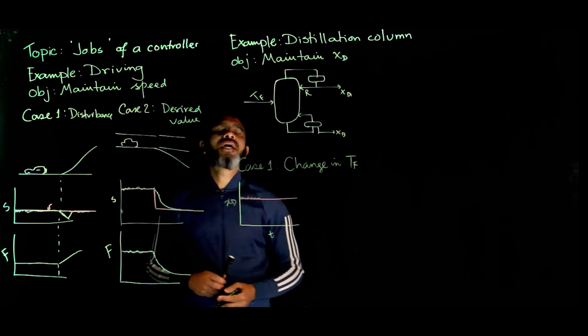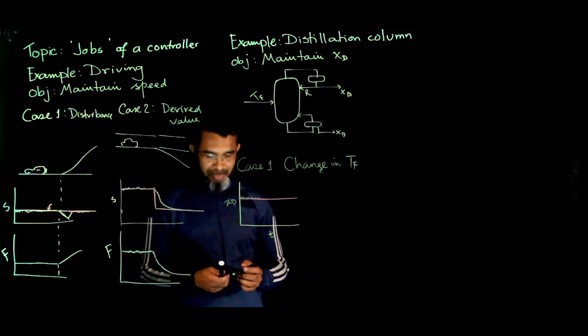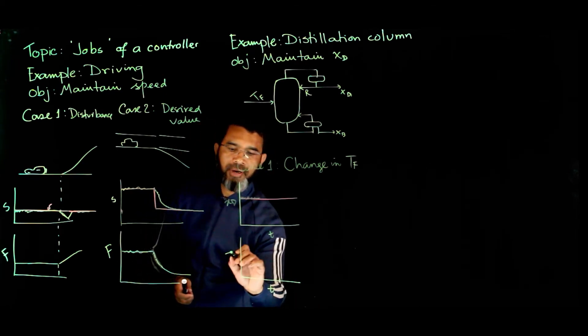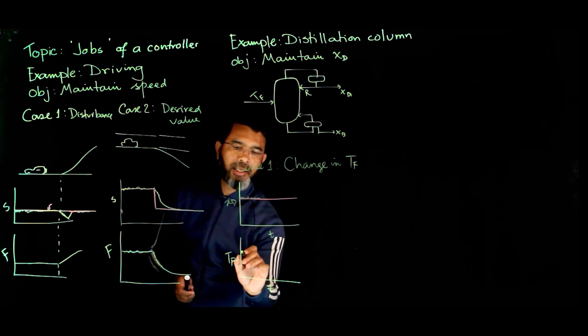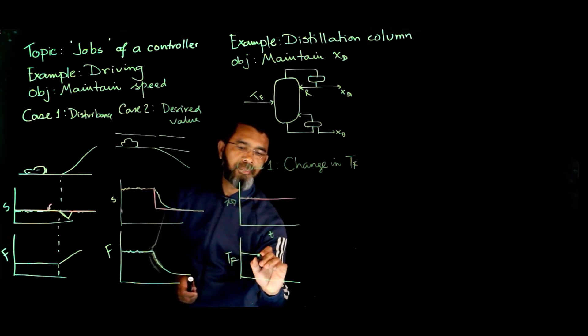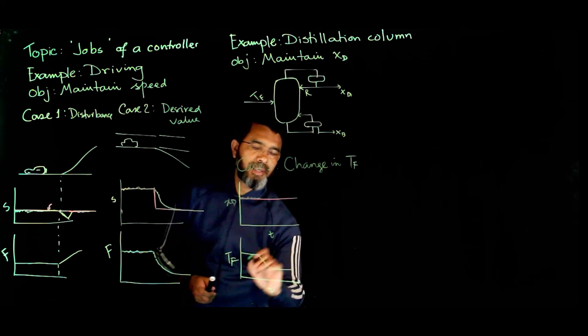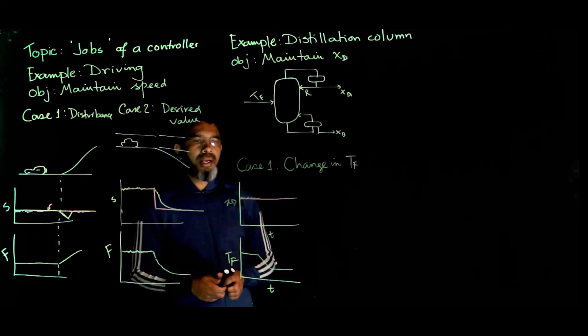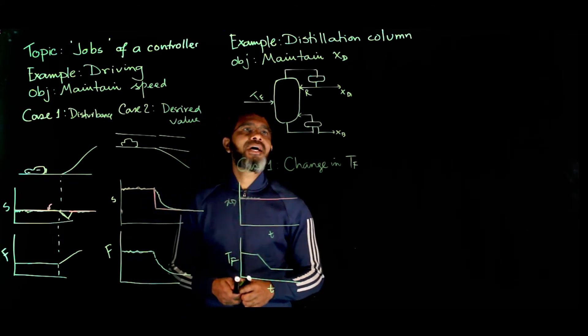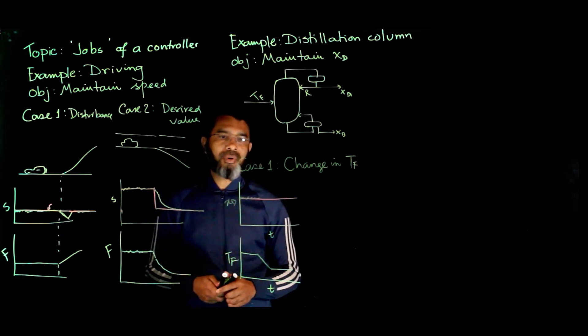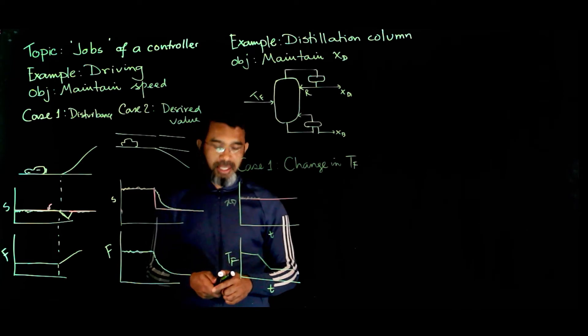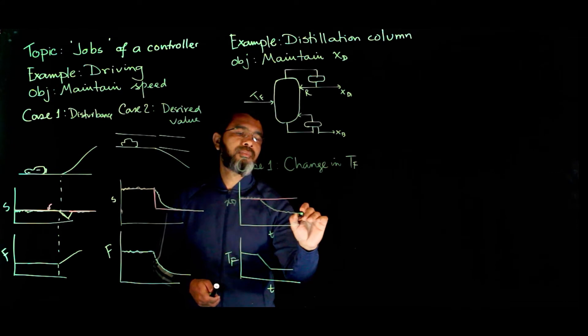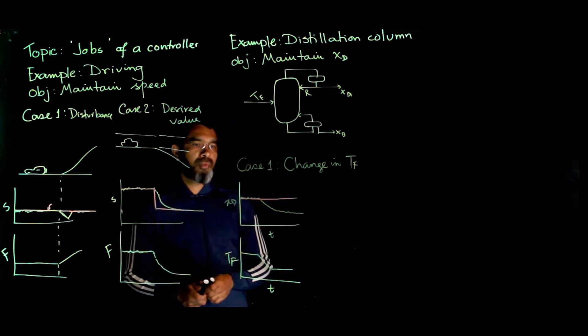If you have a change in the feed temperature, suppose for some reason the feed temperature starts going down at some point, something like this type of change may take place. If you keep the reflux ratio to be the same, what will happen is that the product composition might also follow suit and go to another value.